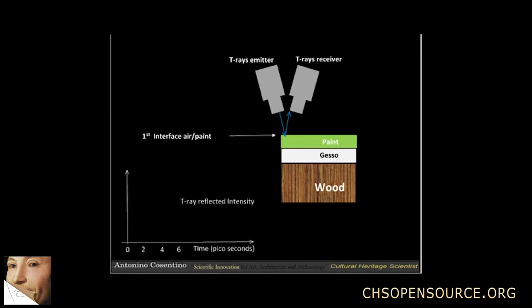A computer will display the T-Ray spectrum with time in picoseconds on the x-axis and the intensity of the reflected T-rays on the y-axis. If zero is the instant the pulse is sent, the T-Ray peak will show up after two picoseconds.